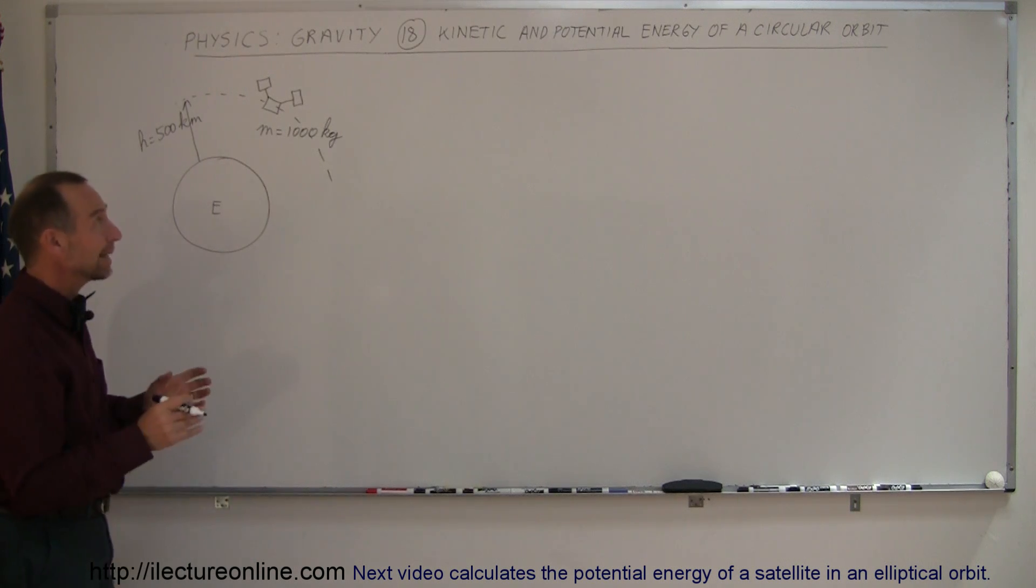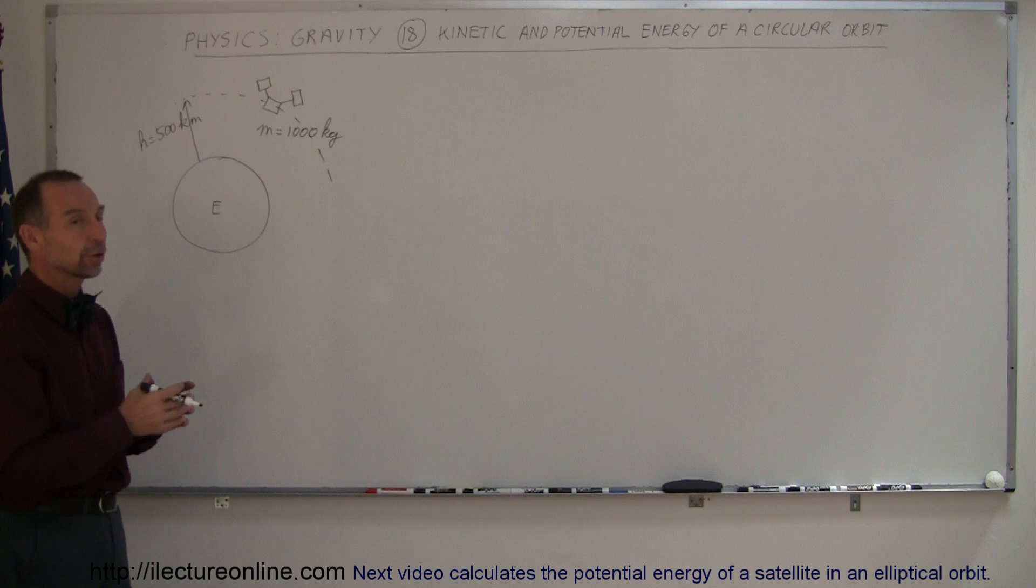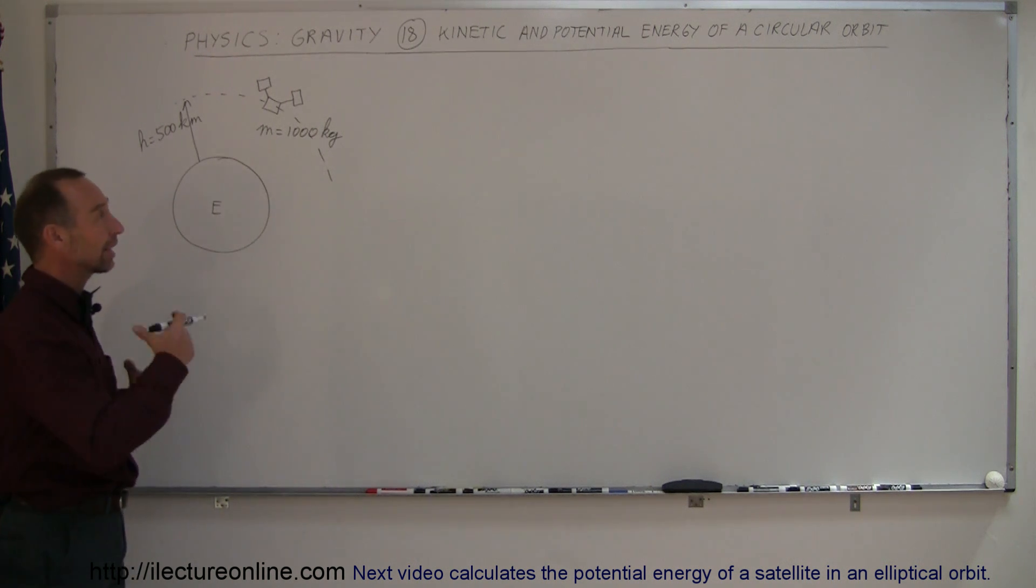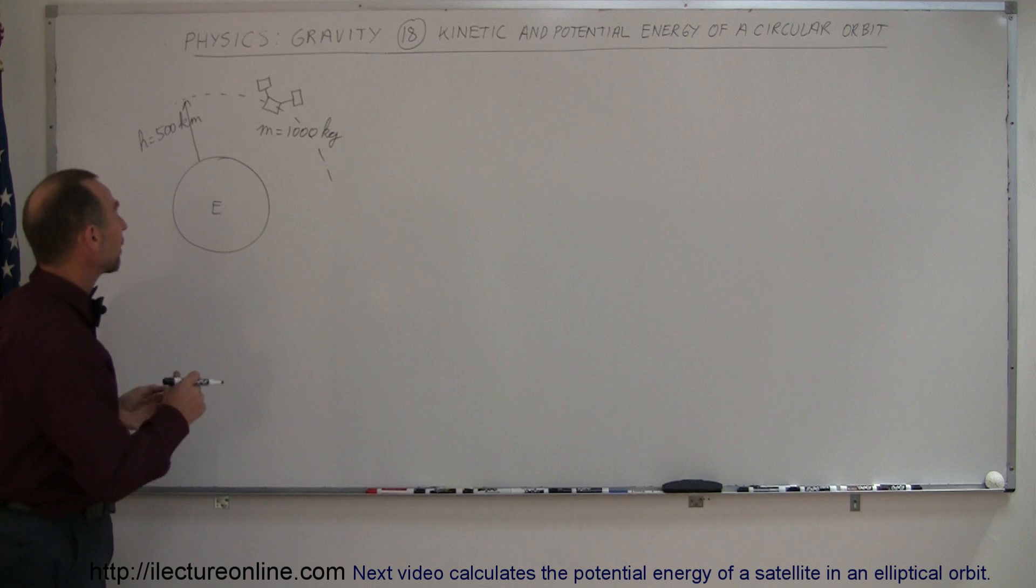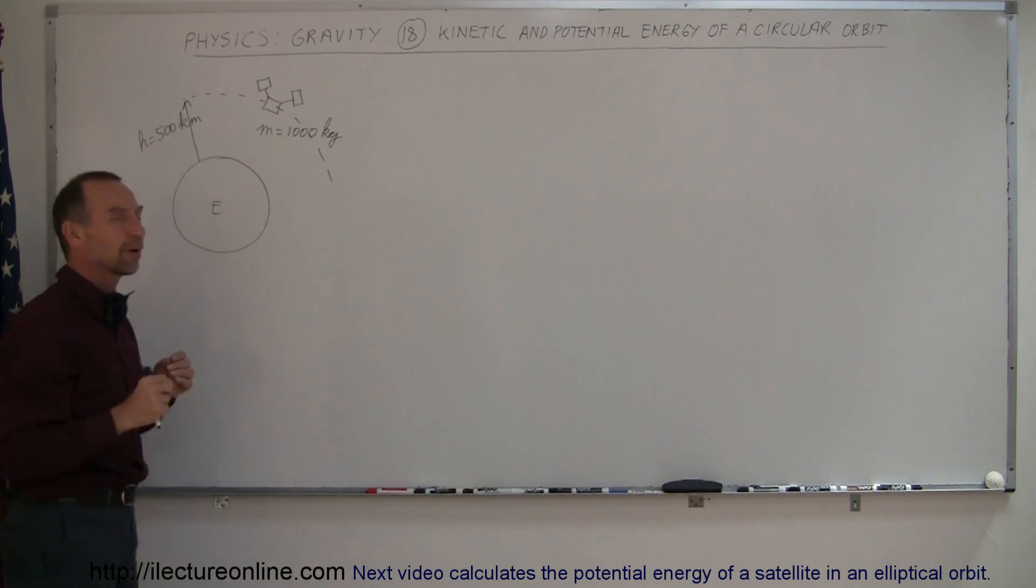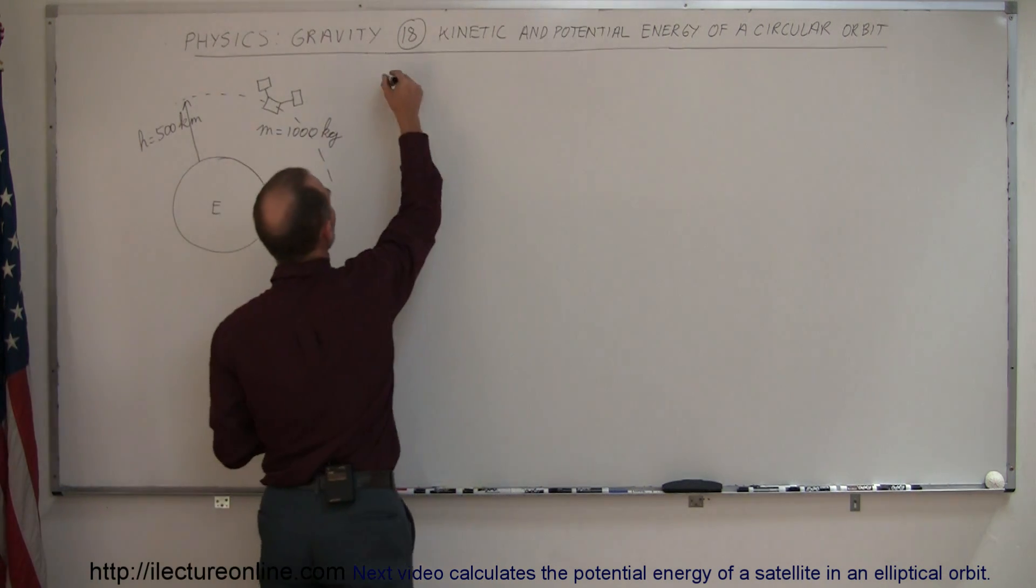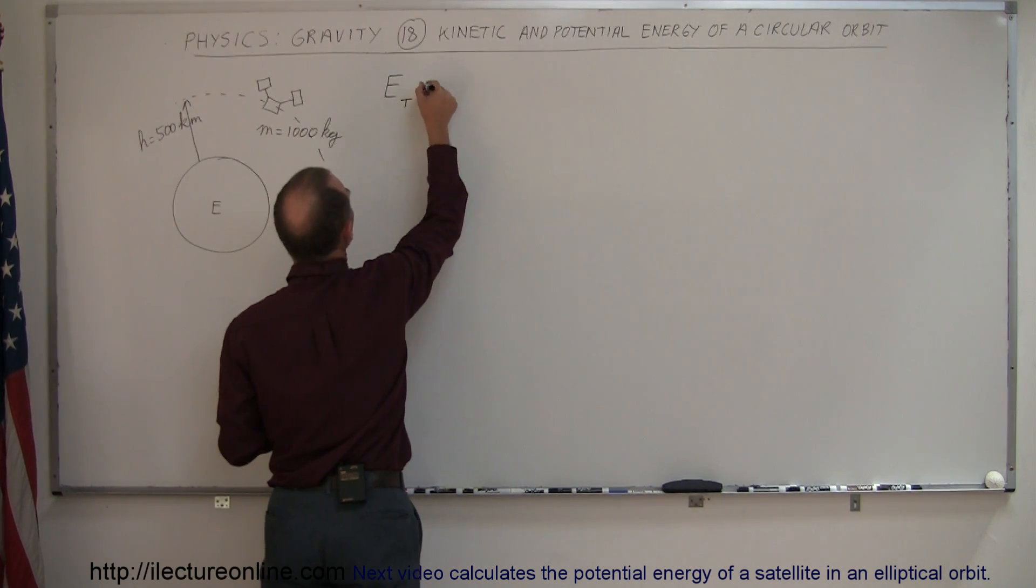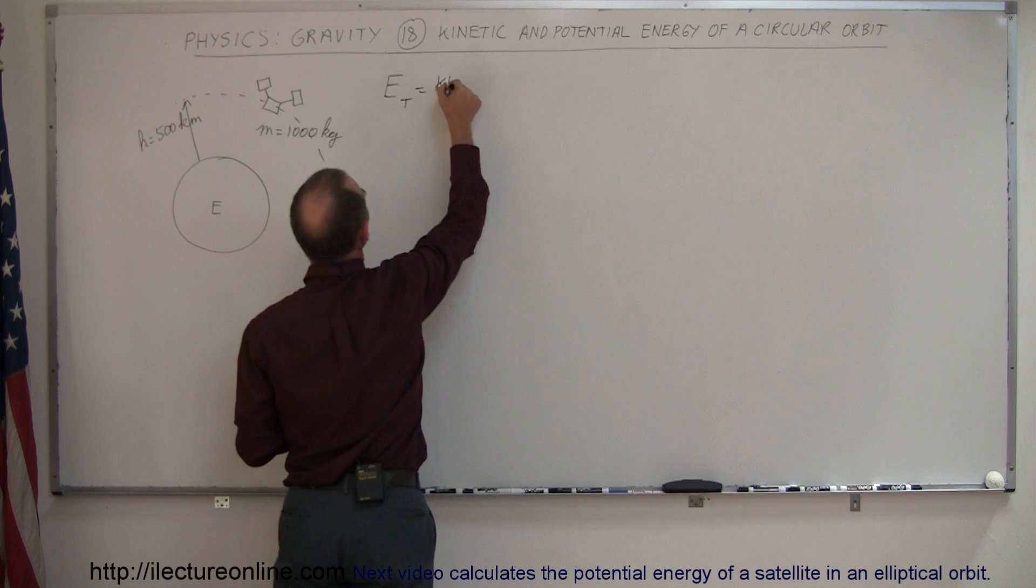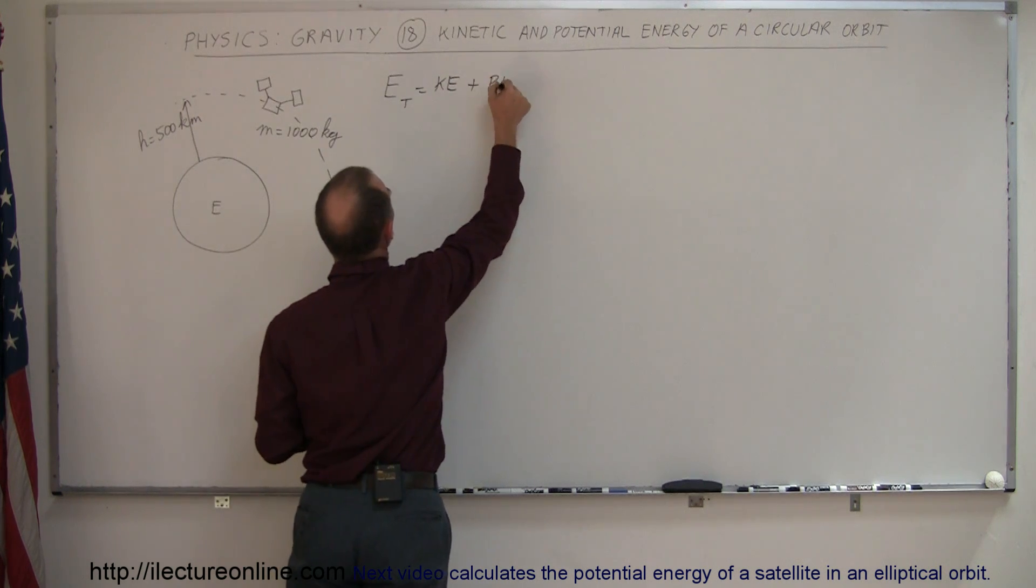Now the next concept here is combining kinetic and potential energy in a circular orbit around the earth. So let's start with a circular orbit first, and later on we'll talk about a non-circular or elliptical orbit. In a circular orbit, a satellite with mass of a thousand kilograms at a height of 500 kilometers above the earth will have both potential and kinetic energy. And so the total energy will be equal to the kinetic energy plus the potential energy.